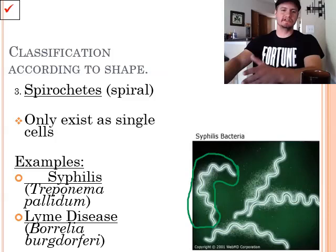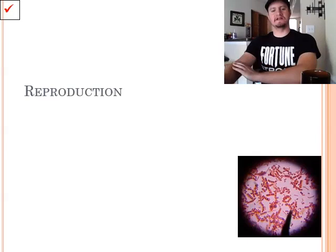So, the final type is spiral, which can only exist as a single cell.